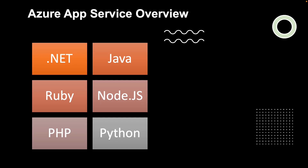Let's learn about what App Service is. Azure App Service is an HTTP-based service for hosting web applications, REST APIs, and mobile backends. You can develop in your favorite language — be it .NET, .NET Core, Java, Ruby, Node.js, PHP, or Python.